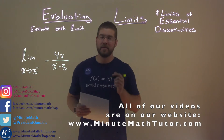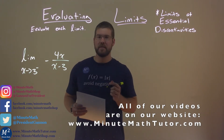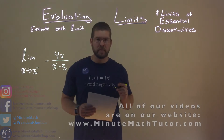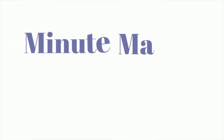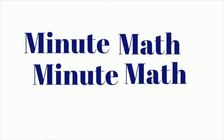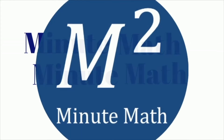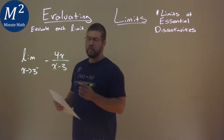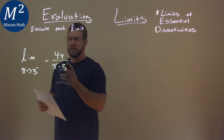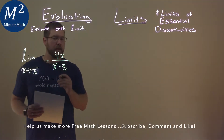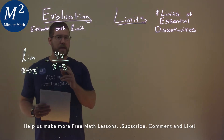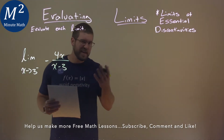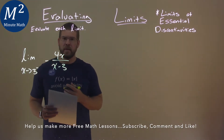Hi, I'm Sean Gannon, and this is Minute Math, and today we're learning about evaluating limits. We're given this limit right here: the limit as x approaches 3 from the left of negative 4x over x minus 3, and we're evaluating this limit.